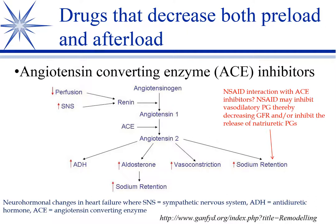NSAIDs are thought to inhibit vasodilatory prostaglandins, which help maintain GFR. Some prostaglandins also promote sodium excretion by the kidney. If you block that with an NSAID, you block those beneficial prostaglandins from doing their job and you antagonize the effects of the ACE inhibitor. It's not a direct antagonism of the drug itself — it's an antagonism of these mechanisms.